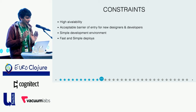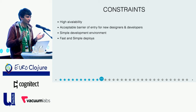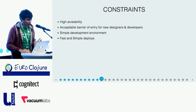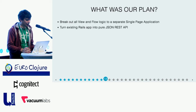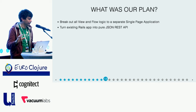We were also focusing very much on keeping a simple development environment. When you use Rails, you've got a very simple setup — you do Rails new and you've got everything in place, and you don't have to worry about infrastructure of your development machine. So we wanted to keep that. And on top of that, iterating faster is really important for us. We try to keep being agile, even after four years as a startup. So for us, it was extremely critical to get fast and simple deploys as well. So what was our plan? We already had the Rails app, so we thought let's just break out all the view and flow logic out of the back end and into a single page application that would run in the browser.